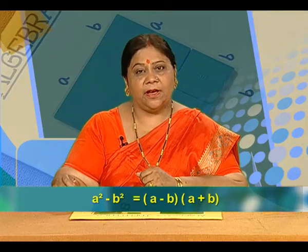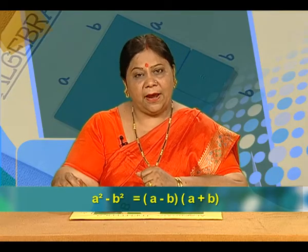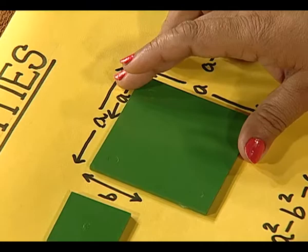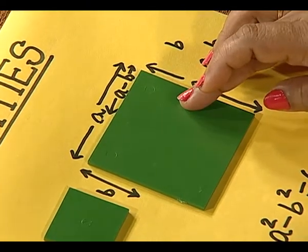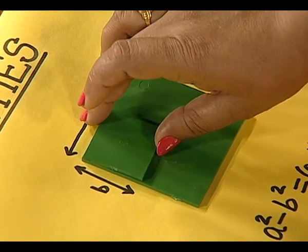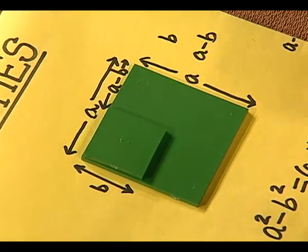Let us verify another algebraic identity with the help of cutouts provided in the kit. The other identity, let us take up as a square minus b square is equal to a minus b into a plus b. Look, how will we do it? Let us take a cutout of side length a units and we have another cutout of side length b units. Let us place it on this.